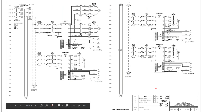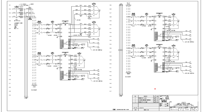Looking at the diagram, at the very beginning our panel needs power connected to it. Almost every single panel will have a main disconnect. In this case it's a circuit breaker type disconnect with a ground lug, and the drawing tells the installer exactly what type of power is required — in this case 575 volts, three-phase, 60 Hz — and the full load amps of the panel, which is 210 amps.